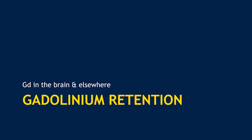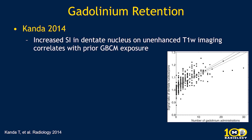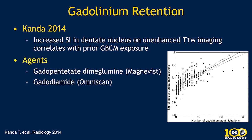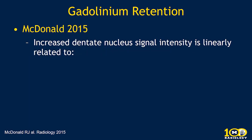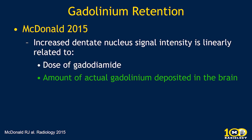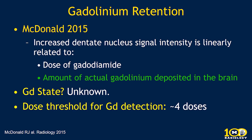The last topic is gadolinium retention. In 2014, it was noticed that patients getting multiple exposures to gadolinium-based contrast material had increasing signal intensity within the deep brain nuclei, correlated with the number of exposures — more gadolinium administrations meant a higher signal ratio of the dentate nucleus to pons. The two agents implicated were Magnevist and Omniscan, which are two of the three agents considered higher risk for NSF. In 2015, McDonald investigated further and found that increased dentate nucleus signal intensity was linearly related to the dose of gadodiamide and actual gadolinium deposited in the brain. The threshold for visual detection was approximately four doses.